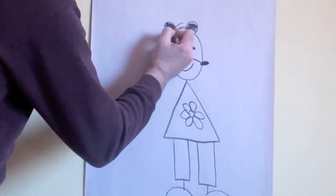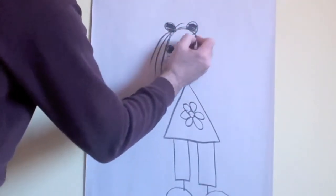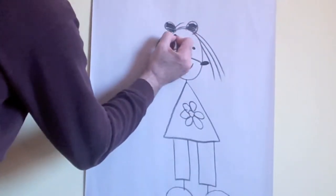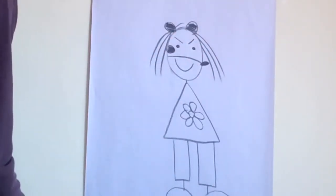To make her hair, just make lines. Hmm, something's missing. Attitude. Well, since she's a bossy older sister, make her eyebrows look like that.